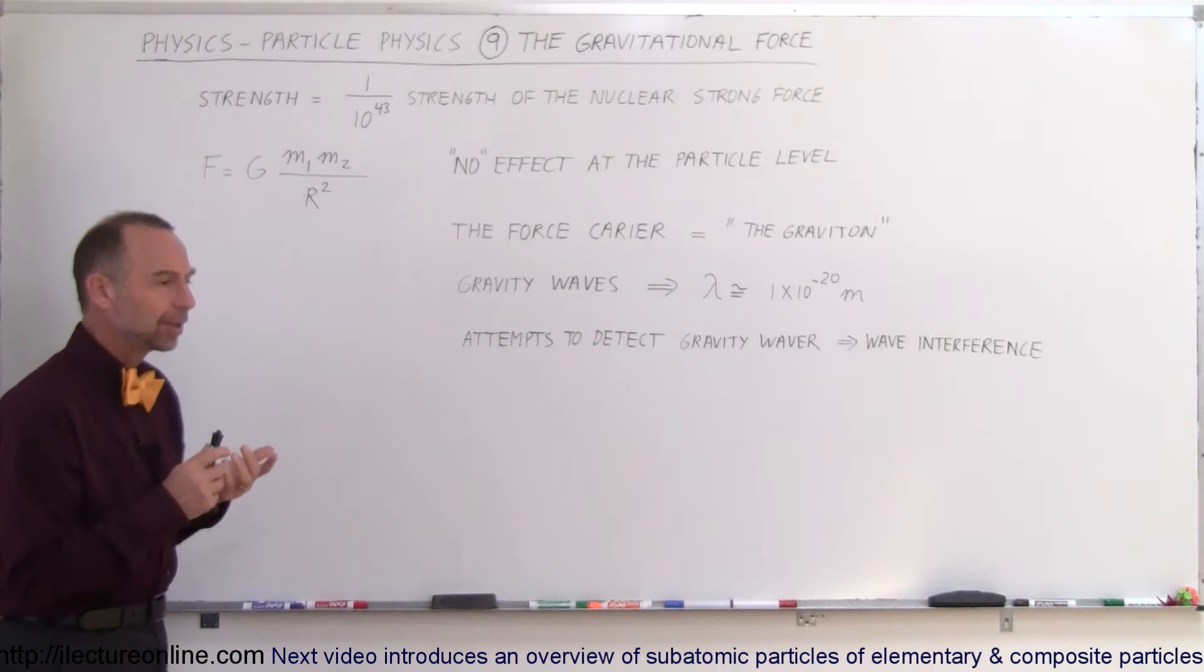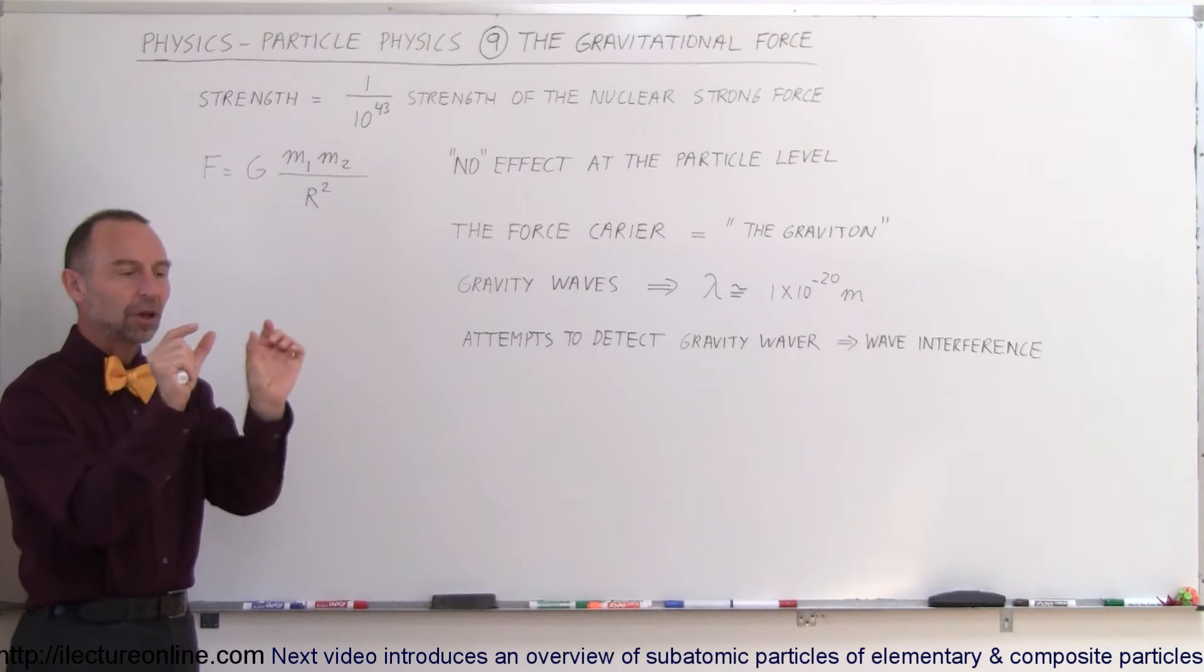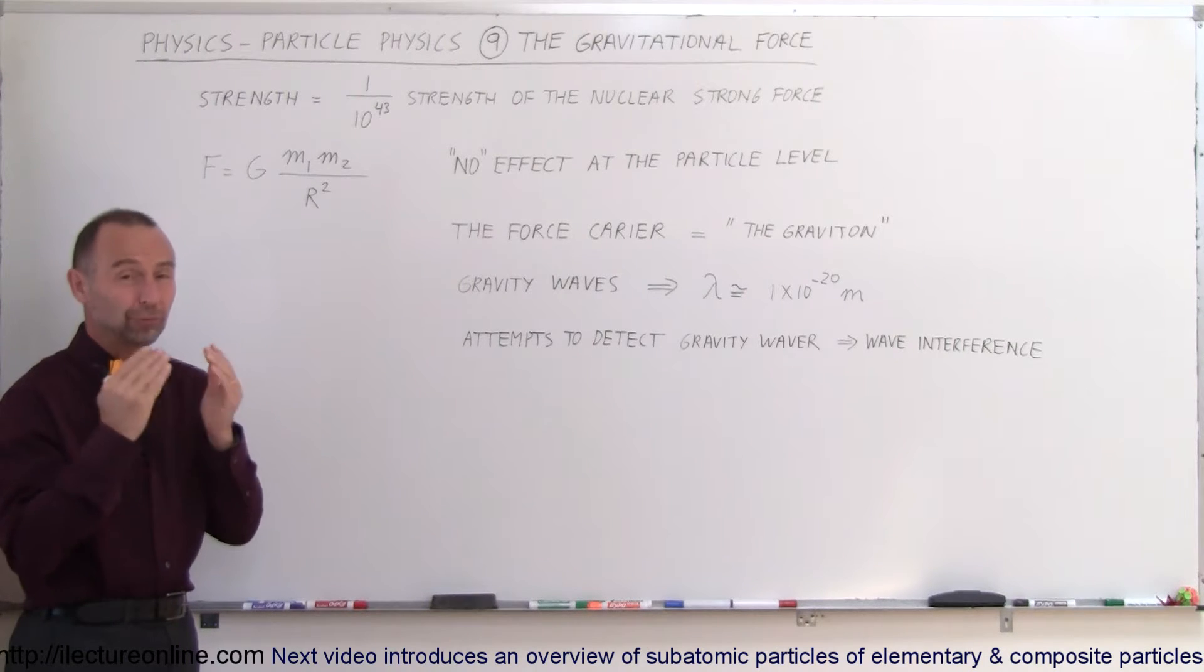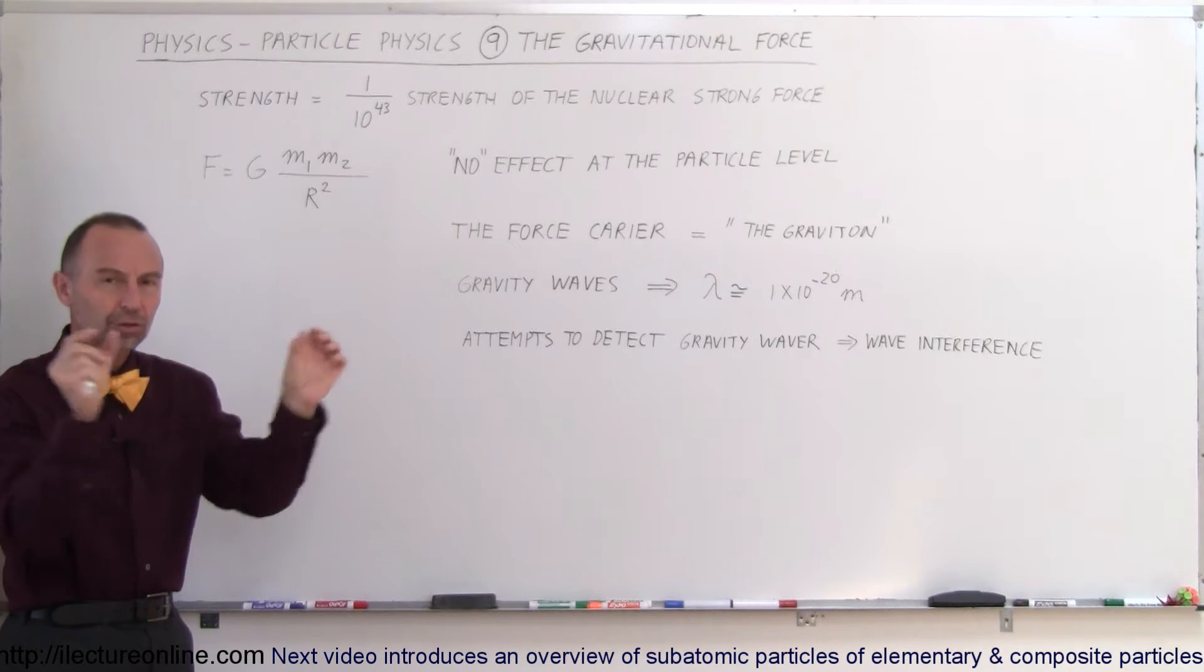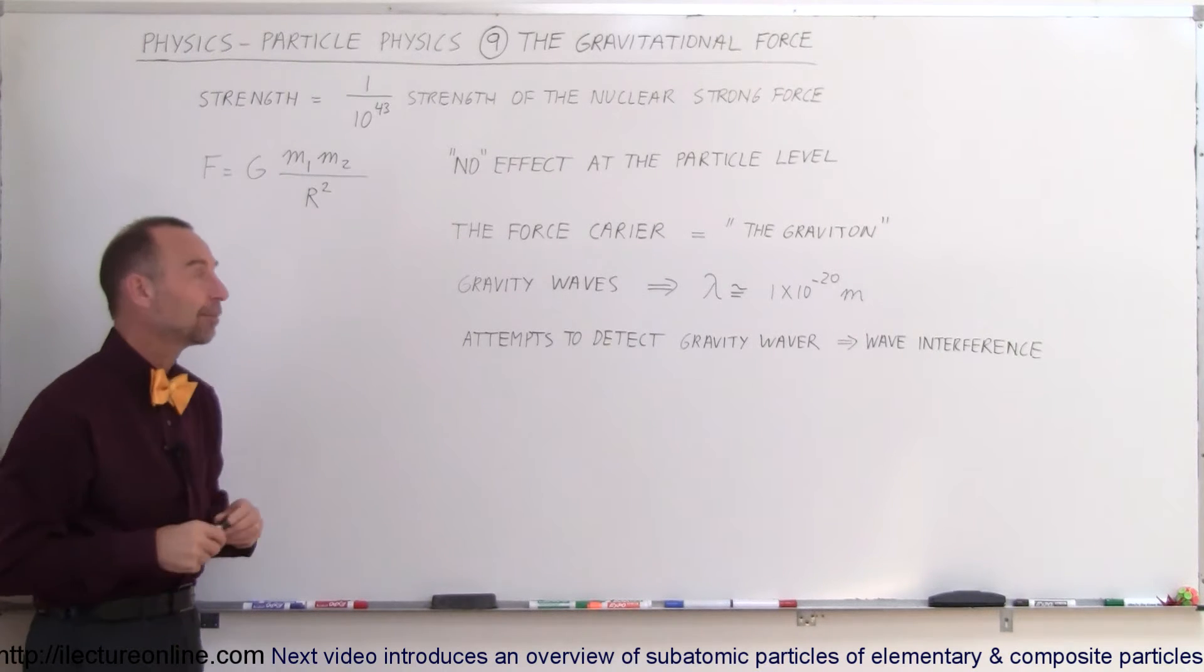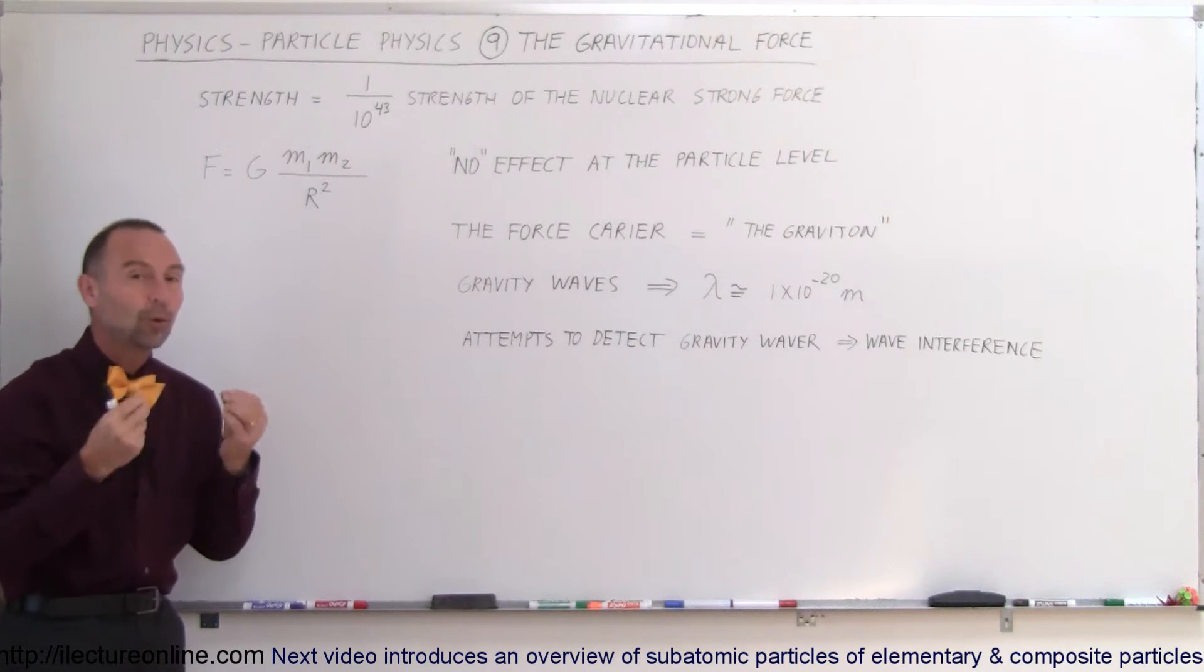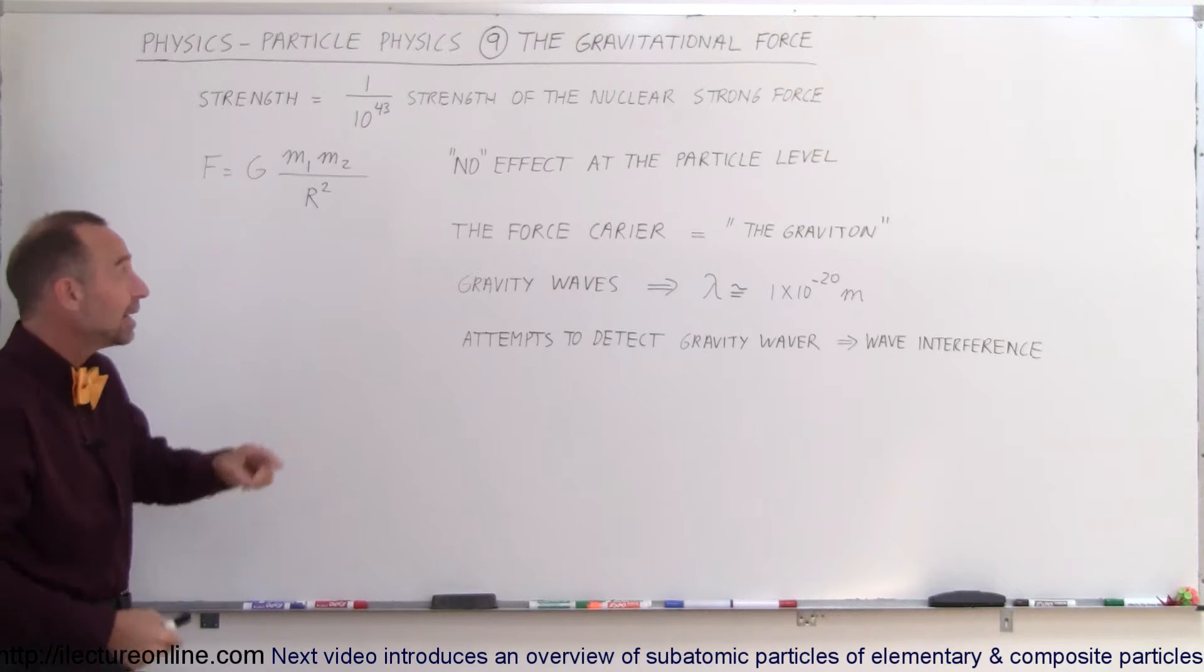To give you an example of that, if you remember in the previous video where we set two protons side by side, the force between them was 160 newtons, the force of repulsion, equal to about 36 pounds of force trying to push the two protons away from each other. Well, the force of gravity should be attracting the two protons together if we put them side by side.